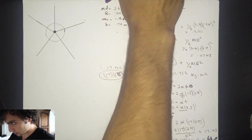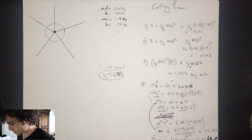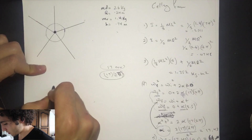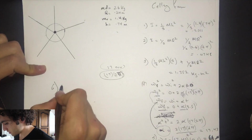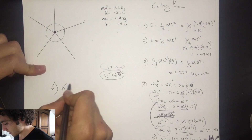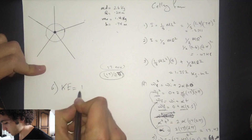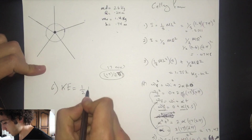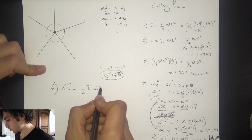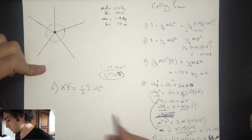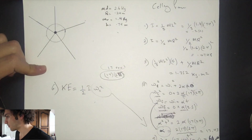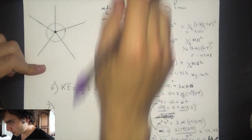Number six asks for the final rotational kinetic energy. We use the equation: KE equals one-half times I times omega final squared. You use the omega final value from number five.